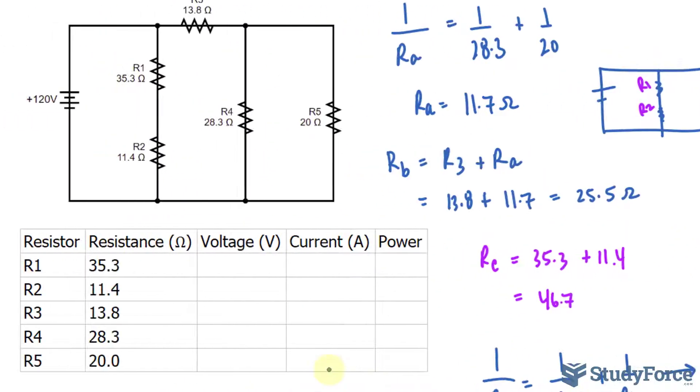In part two our goal is to find the individual voltage, current, and power that is going through each of these resistors. We've yet to fill in this table and that's what we'll be doing in this part.